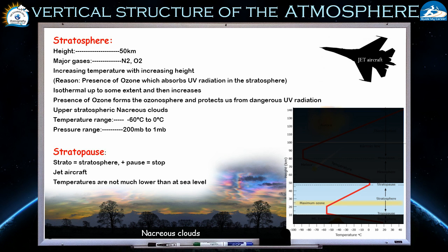Now it is time to learn about the rest of the layers in the vertical structure of the atmosphere. First we will look at the second layer — the stratosphere. As you can see highlighted in the figure, the height of the stratosphere is 50 kilometers. The major gases in this layer are also nitrogen and oxygen. The temperature increases with increasing height.